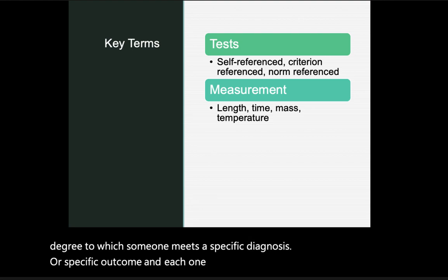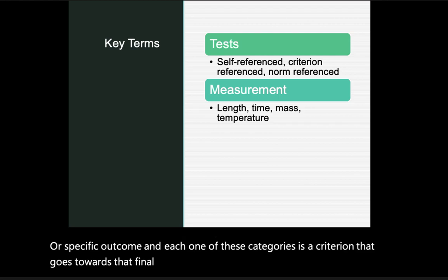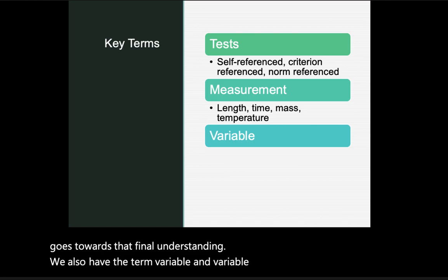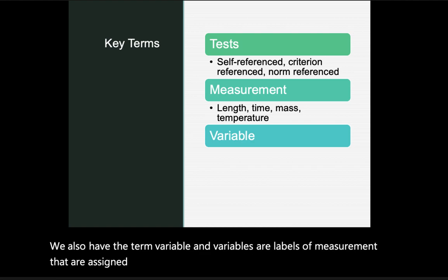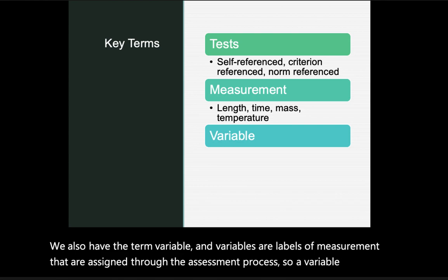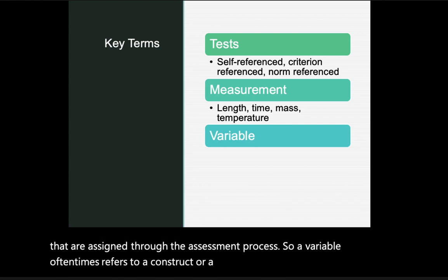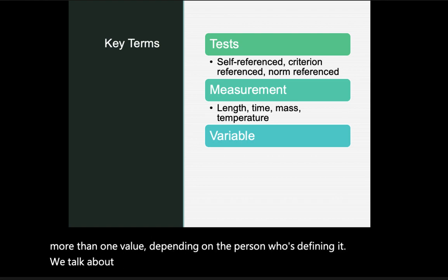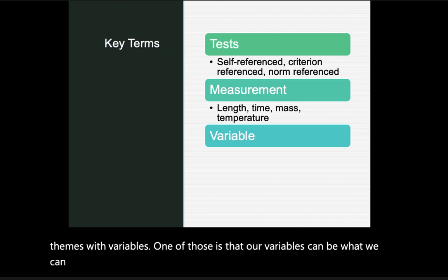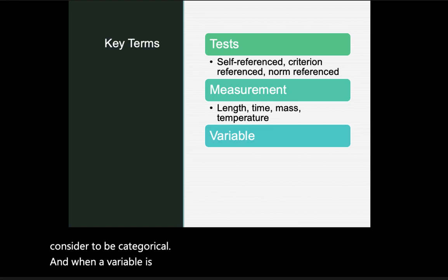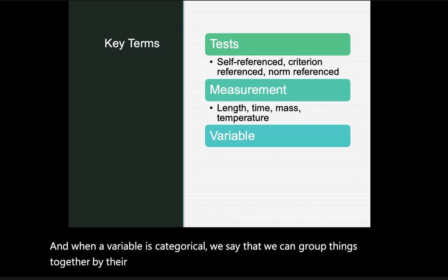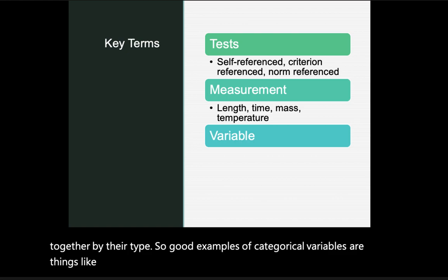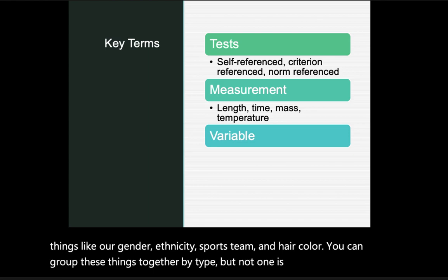We also have the term variable. Variables are labels of measurement assigned through the assessment process. A variable refers to a construct or concept of interest that can take on more than one value depending on who is defining it. Variables can be categorical, meaning we can group things together by type — such as gender, ethnicity, sports team, or hair color — where no category is inherently better than another.